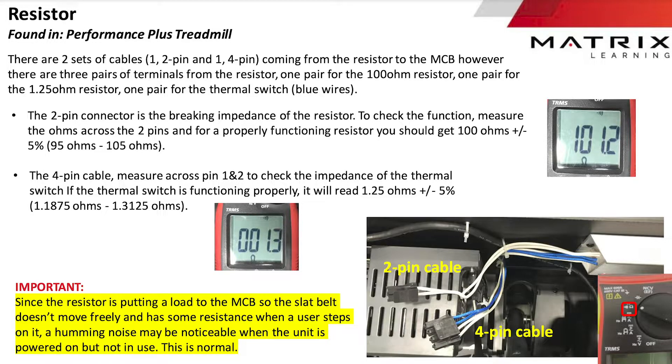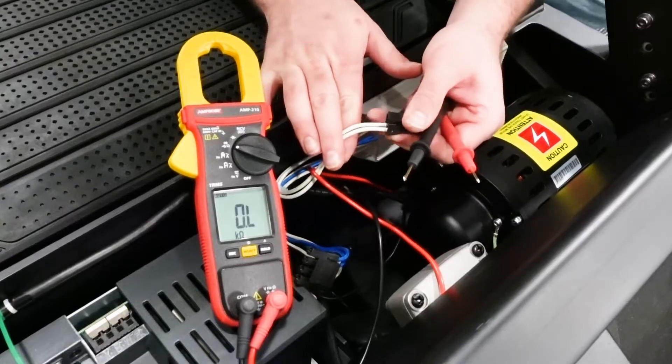Performance plus treadmills use a 100 ohm load resistor, which can be measured on the two-pin resistor wire.